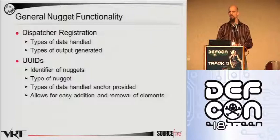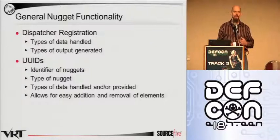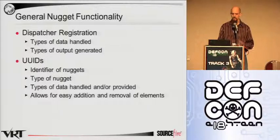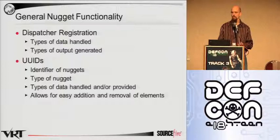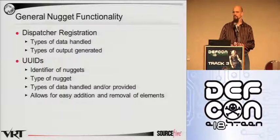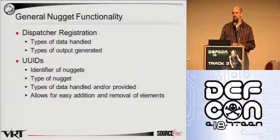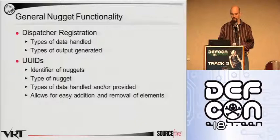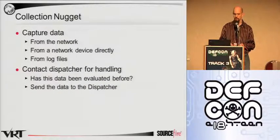Because it is a nugget architecture, everything has the same basic architecture where it's talking to the dispatcher and registering and performing the different tasks. We use UUIDs to identify everything because it makes it really easy to add and remove elements from the system depending on what tasks you need.